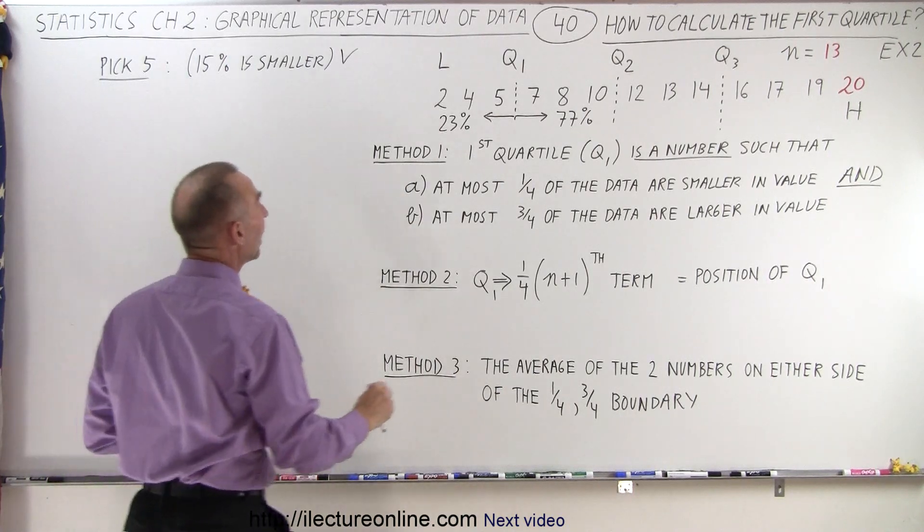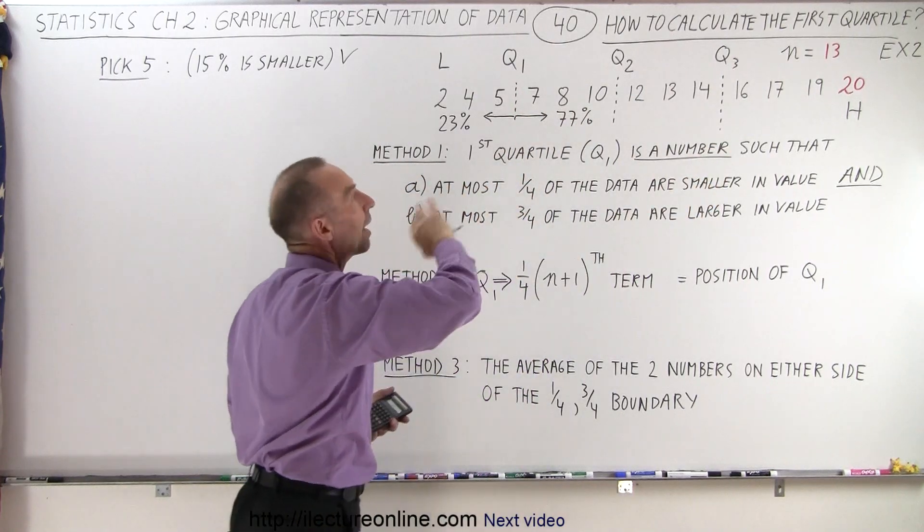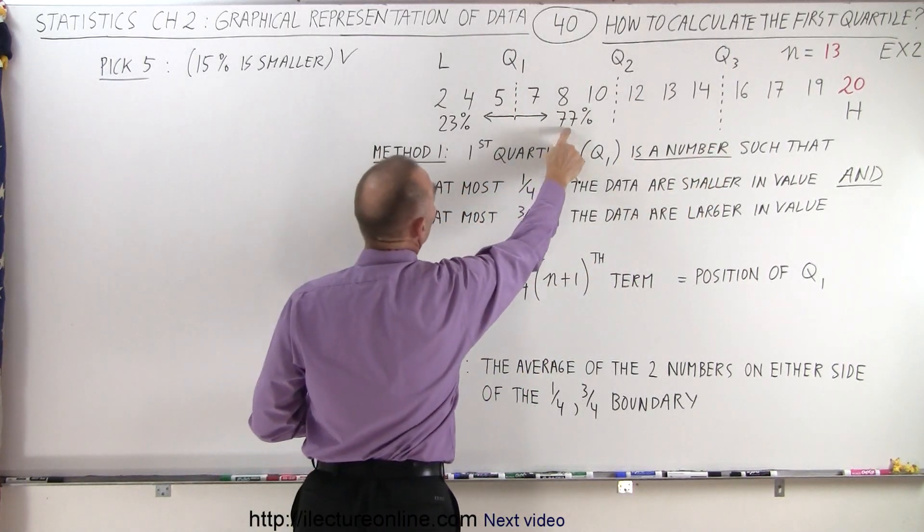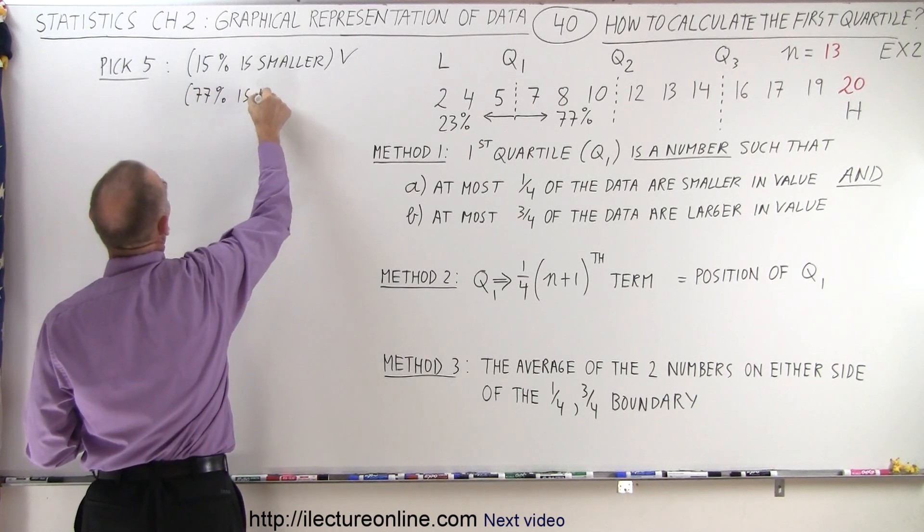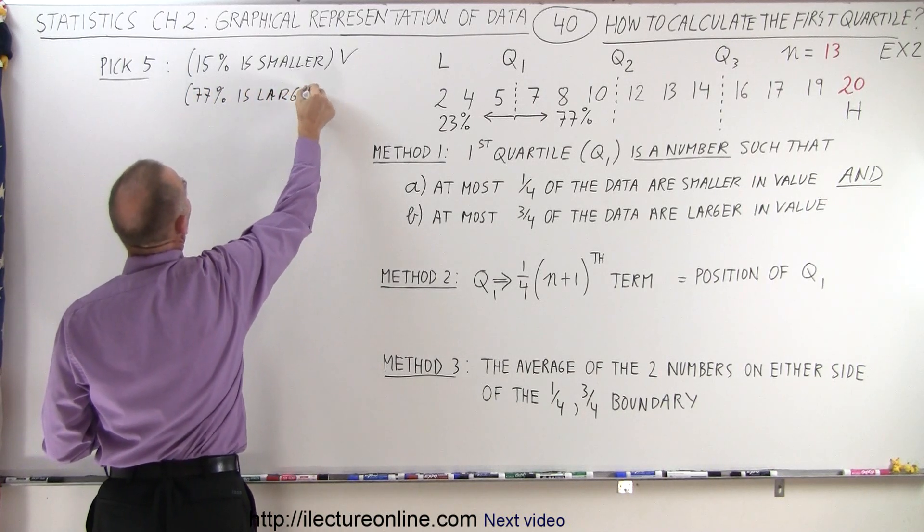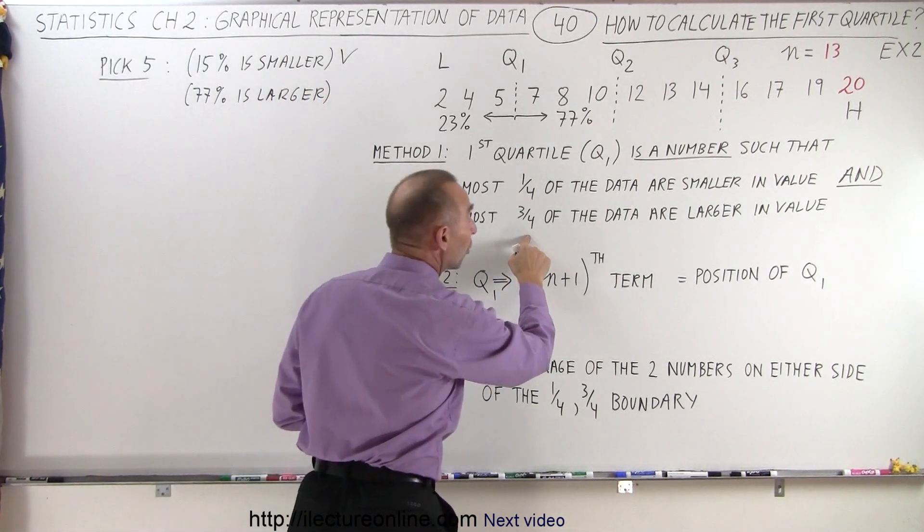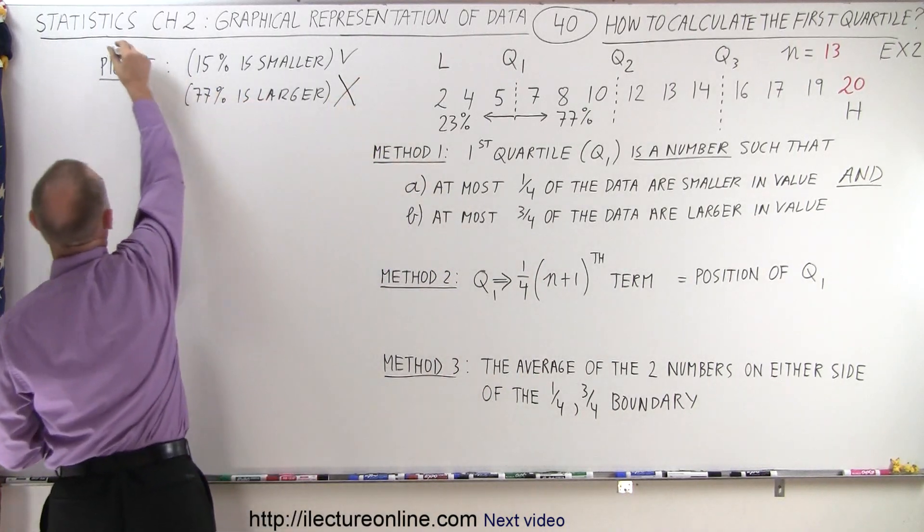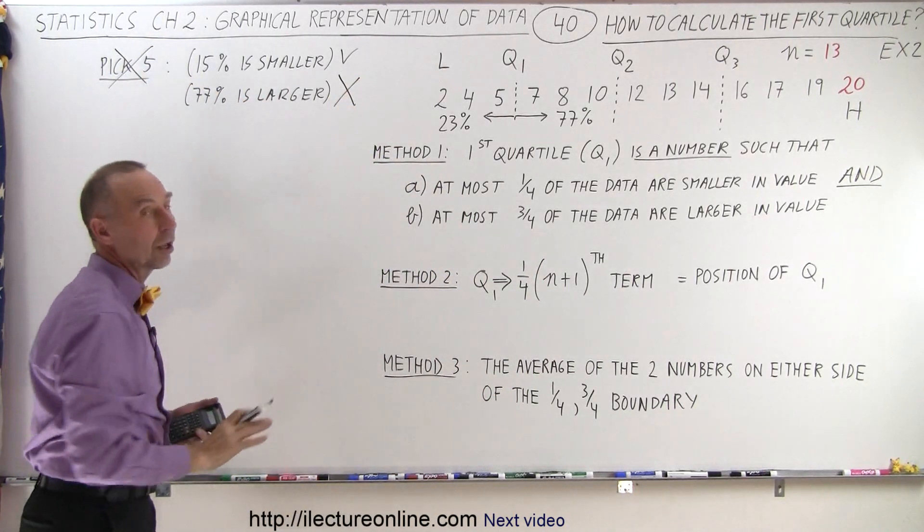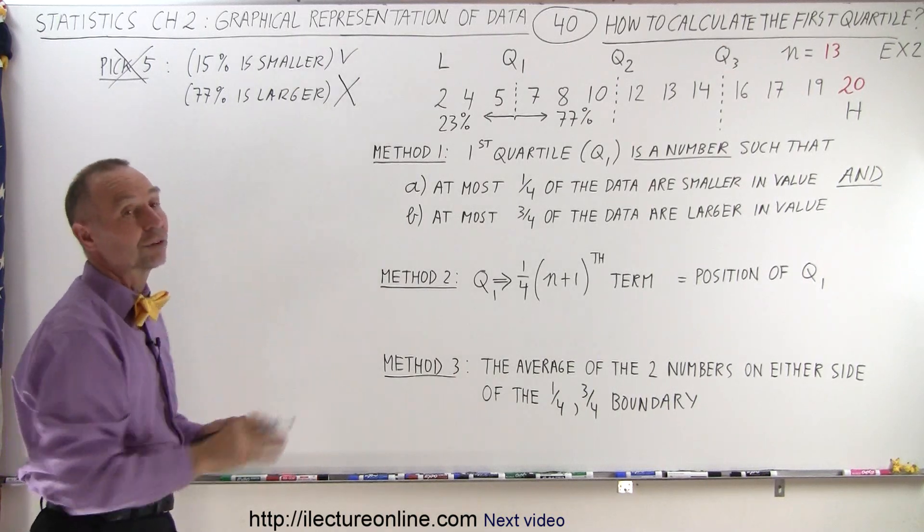How about the second condition? If we pick 5, then 10 out of 13 are outside, and of course 10 out of 13 is 77%, so that means 77% is larger. And that violates the rule because at most it must be three quarters, which is 75%. Because of this second one, we cannot pick 5. Five is no longer a legitimate value for the first quartile if there's 13 data points.